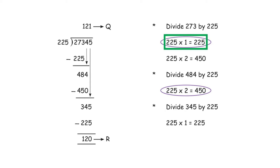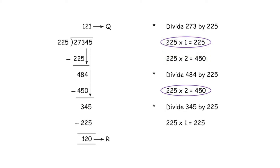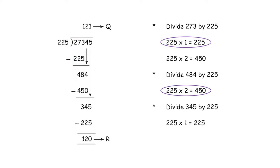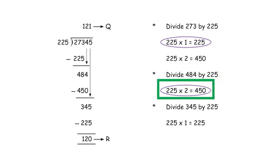The first step is to divide 273 by 225. We know 225 × 1 = 225 and 225 × 2 = 450, so we take 225 × 1. Subtracting: 273 − 225 = 48. Then bring the 4 down to get 484. Next, divide 484 by 225: 225 × 2 = 450, the closest number. So 484 − 450 = 34.